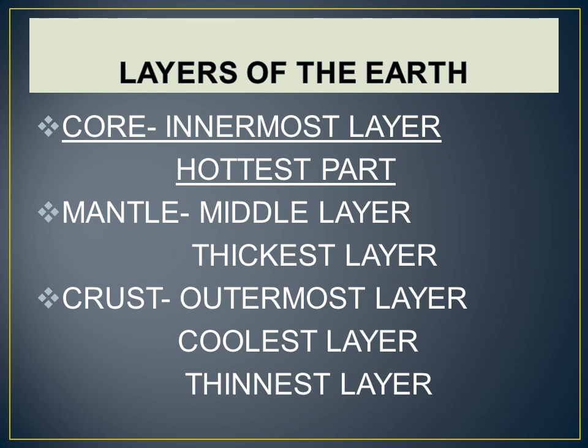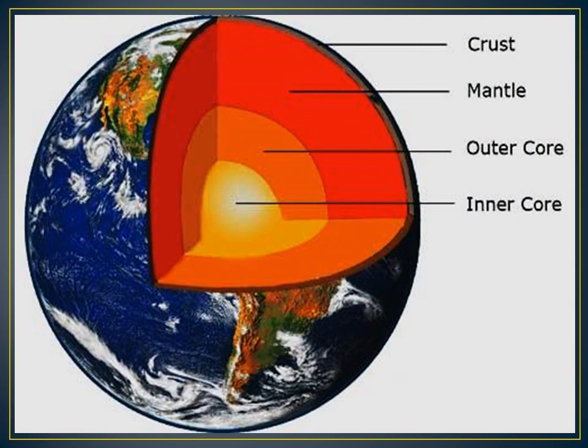The first layer we are going to study is the core. The innermost layer of the Earth is called the core. It is the hottest part, which is made of dense minerals, mainly iron and nickel. Follow the picture and go to the next page, page number 96. The core has a solid inner core and a molten outer core. The inner core has a temperature of about 4000 degrees centigrade.